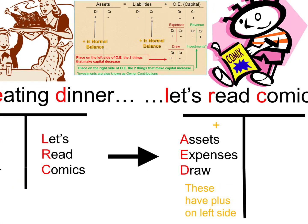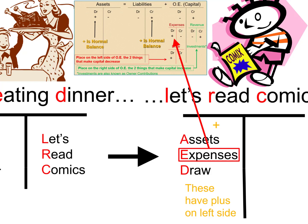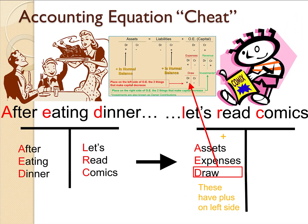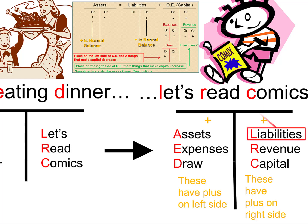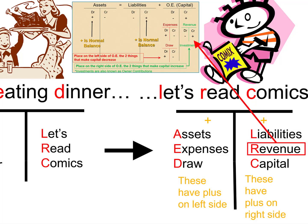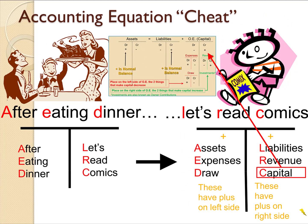And 'let's read comics' stands for liabilities, revenue, and capital. These are placed on the right side of the T-account because these three account types have the plus on the right side. Liabilities have the plus on the right side, revenues have the plus on the right side, and capital has the plus on the right side. So that's one way to help you memorize the pluses and minuses of the T-accounts — after eating dinner, let's read comics. If you can come up with something more memorable for A, E, D and L, R, C, go ahead and use your own memorization technique.